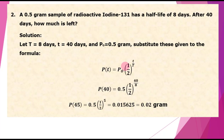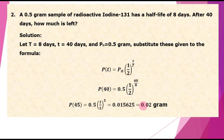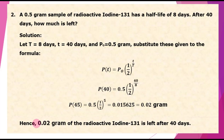Substituting these values into the formula P(t) equals P sub 0 times one-half raised to t over T, we get P(40) equals 0.5 gram times one-half raised to 40 over 8. Computing this, we get 0.02 gram. Hence, after 40 days, there will be 0.02 gram of the radioactive iodine-131 remaining.